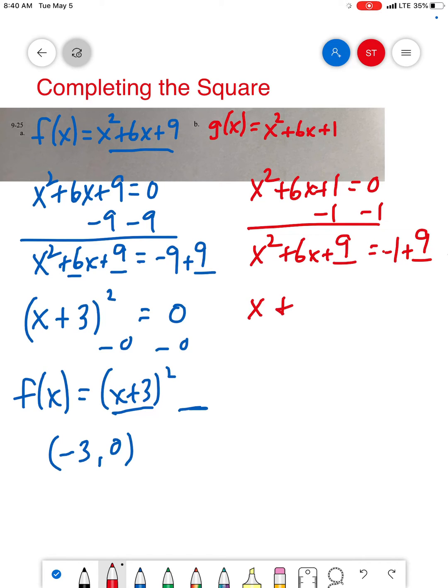Bring down the x, bring down that plus sign, that plus sign right there, half of 6 is 3, squared equals 8. Now we subtract 8, and my function is g of x equals x plus 3 squared minus 8.